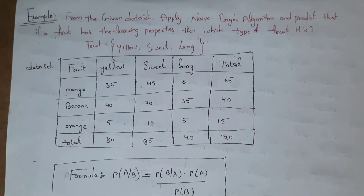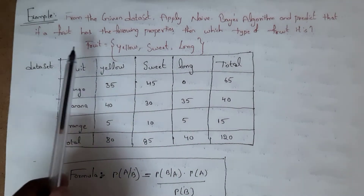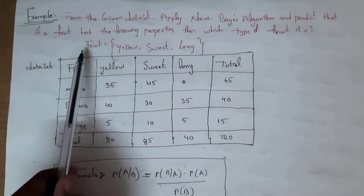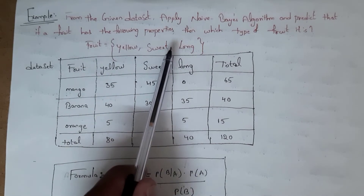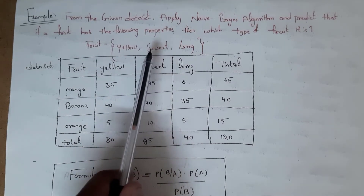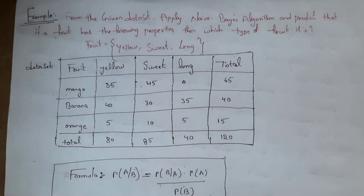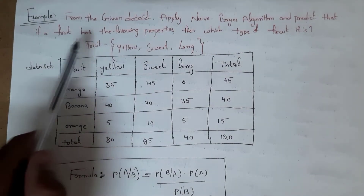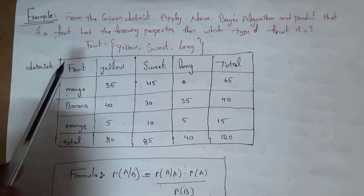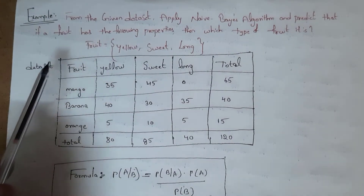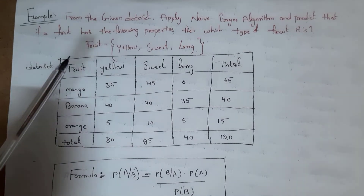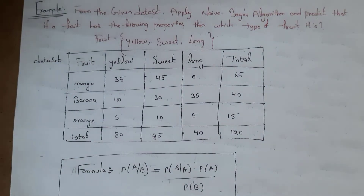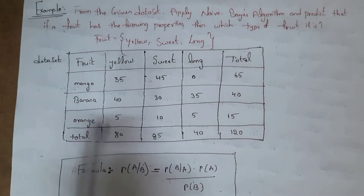In the question, a new fruit is given with the following properties: it is yellow in color, it is sweet, and it is long. We need to find which category this fruit belongs to — either mango, banana, or orange. We need to find this using the Naive Bayes algorithm.